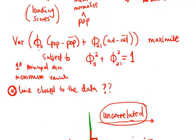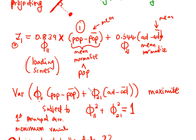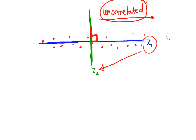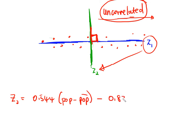Once we calculate Z1, it will be easy to calculate Z2 because we just look for a line perpendicular to it. In our case, with the Z1 we had, Z2 can be written as something like: 0.554 times (pop minus pop-bar) minus 0.839 times (ad minus ad-bar) — and this line is perpendicular to the original Z1.